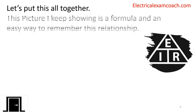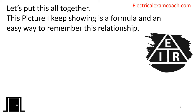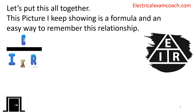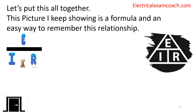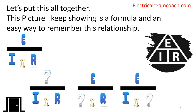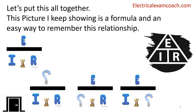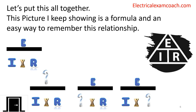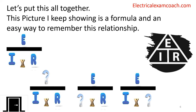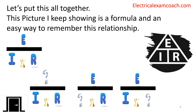Let's put this all together. The Ohm's Law pyramid is a formula. We have E on top of a division line, and down below are I and R — implied multiplication. As long as we know any two of the three, we can always find the unknown. All the math is sixth grade math. If I know I and R, I can multiply. If I know E and R, I divide to find I. If I know I and E, I divide to find R.